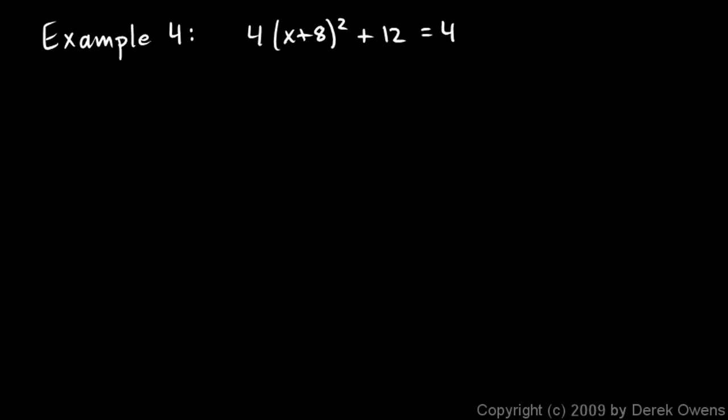Okay, here's another example. Sometimes there's no solution, and that turns out to be the case here. Our technique is to take the thing that is squared, in this case the x plus 8 is squared, and we want to isolate that. So we want to isolate the squared thing so that we can take a square root to get rid of the squared. So what do I do here?